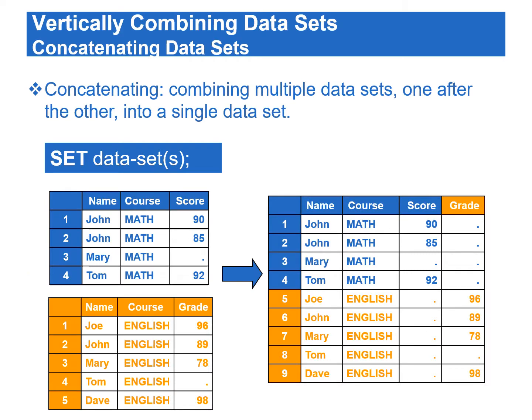In SAS, two methods of combining data vertically are concatenating and interleaving data. Concatenating data sets refers to creating one single data set by combining two or more data sets one after another, by using one set statement.